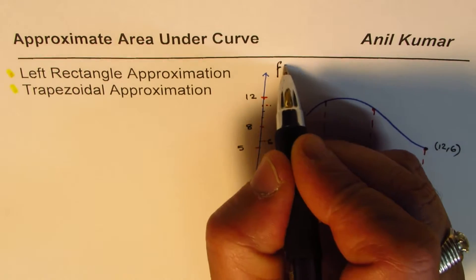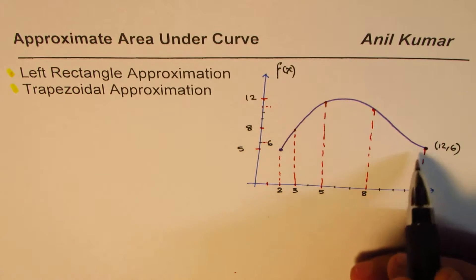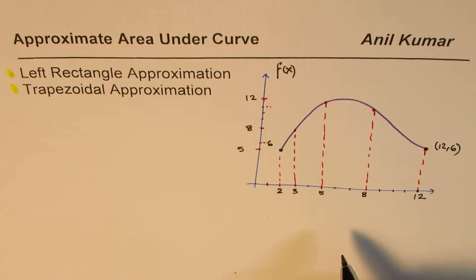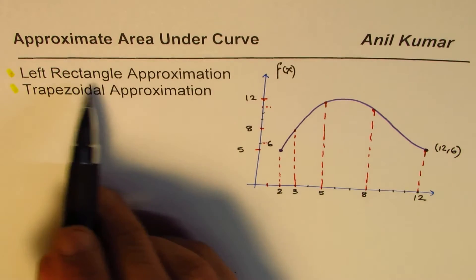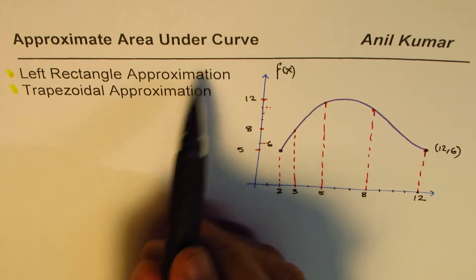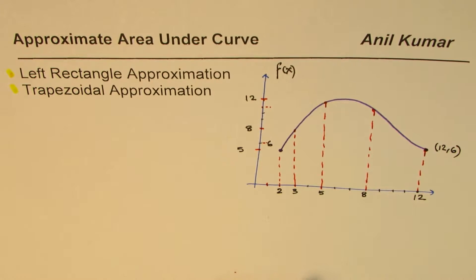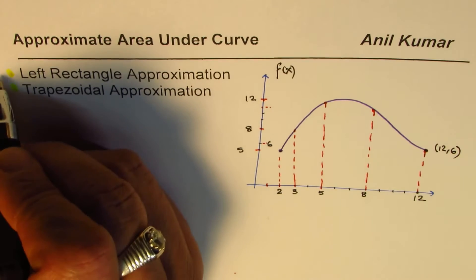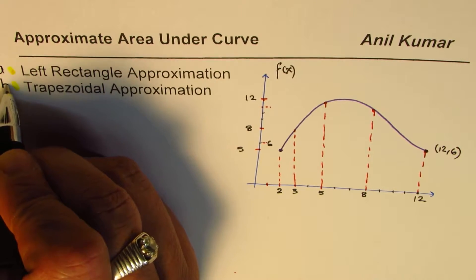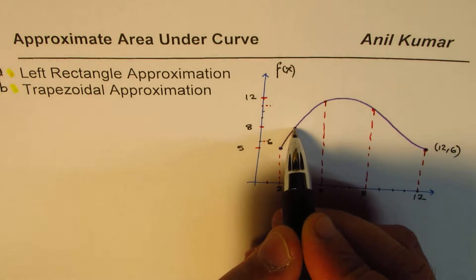We'll call this as a function, and we need to find the area under this function and above the x-axis. We'll use two methods of approximation: the first one is left rectangle approximation, and the other one is trapezoidal approximation. Let's call this method A and method B. Let's clearly write down the coordinate points.